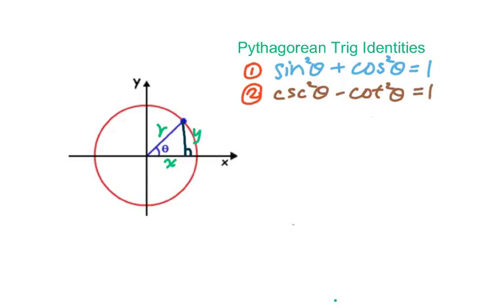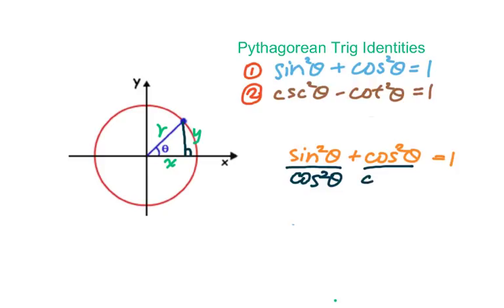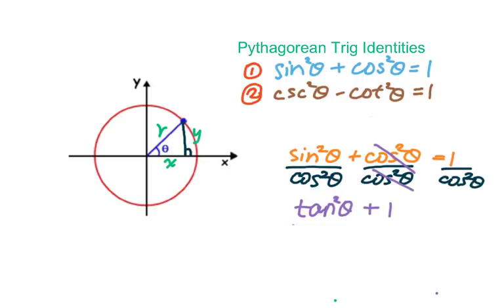For the third Pythagorean trig identity, we again start from sin squared θ plus cos squared θ equals 1. This time, I divide everything by cos squared θ. We get sin squared θ over cos squared θ, which is tangent squared θ, plus 1 equals 1 over cos squared θ, which is secant squared θ.